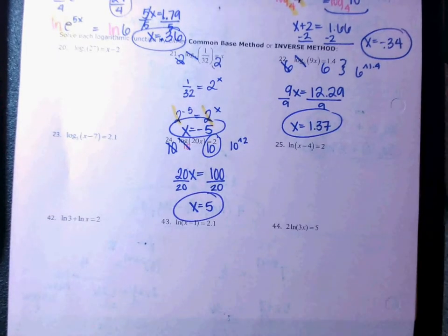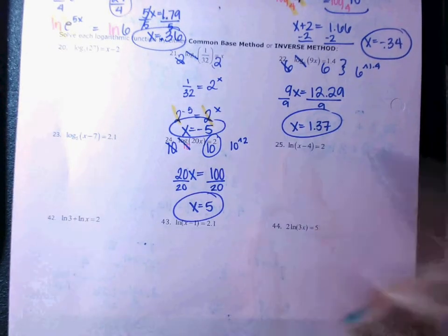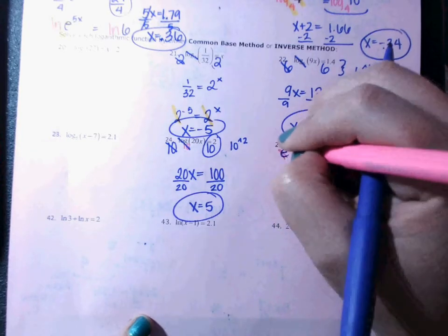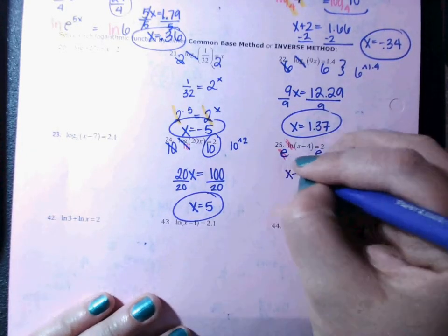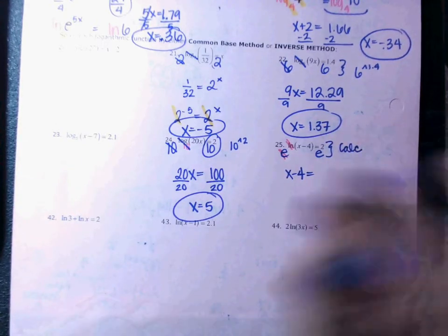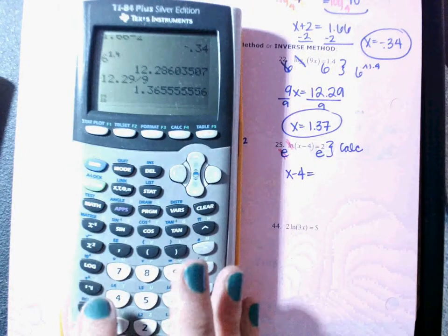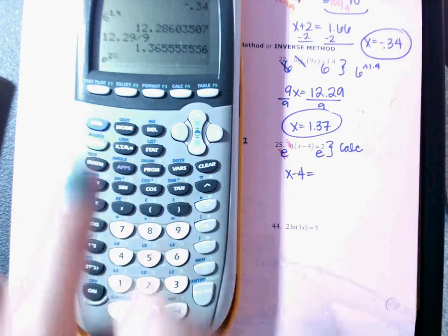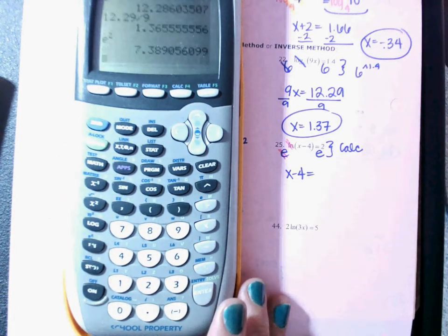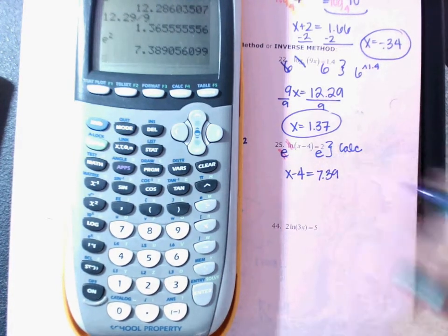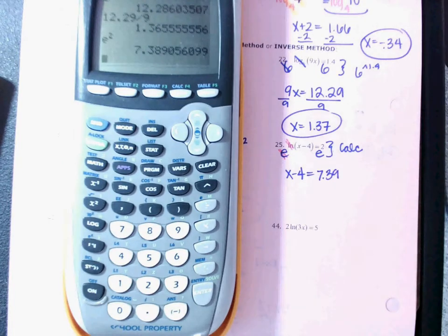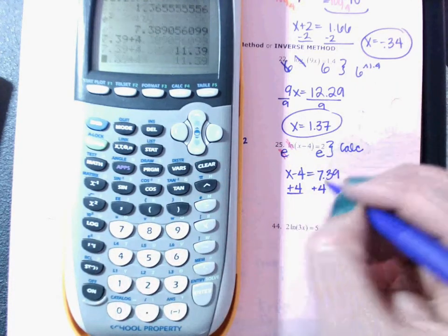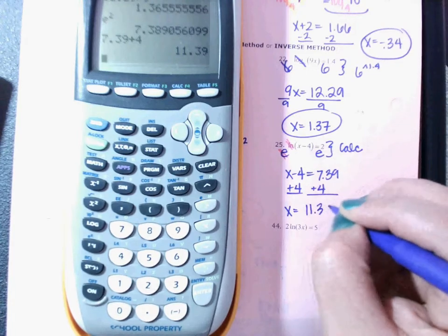The only way to get rid of an ln is to e both sides. E and ln cross out, and x minus 4 comes down. Then e squared — to get that, hit second then ln on your calculator to get the e button, then plug in 2. E squared is 7.389, which rounds to 7.39. Then add 4 across: 7.39 plus 4 gives 11.39.